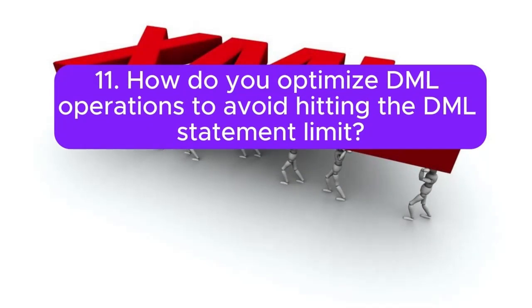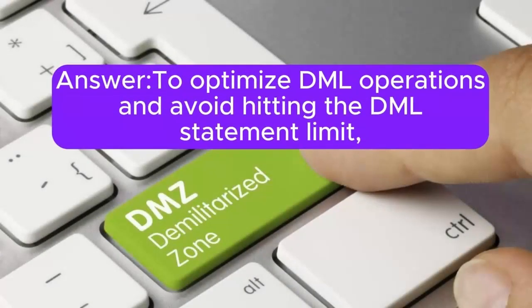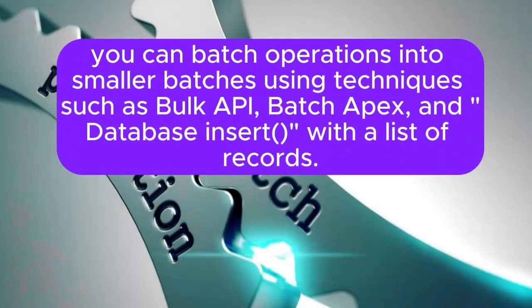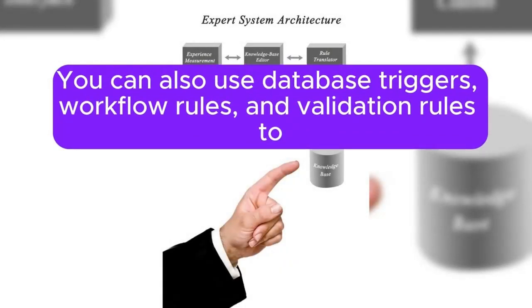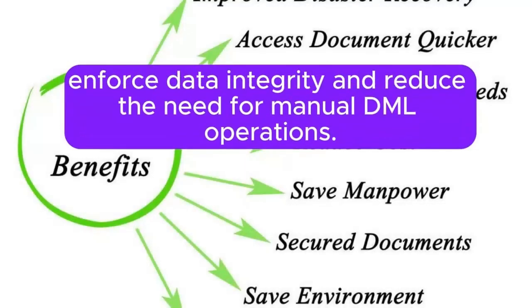Question 11: How do you optimize DML operations to avoid hitting the DML statement limit? Answer: To optimize DML operations, you can batch operations into smaller batches using techniques such as Bulk API, Batch Apex, and Database insert with a list of records. You can also use database triggers, workflow rules, and validation rules to enforce data integrity and reduce the need for manual DML operations.